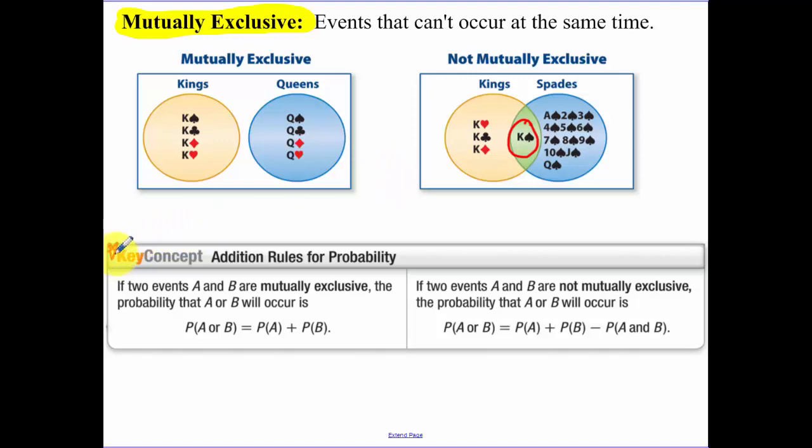This is important. Please make sure you write this down. Two events are mutually exclusive. If they're mutually exclusive, the probability that A or B occurs, you just add the probability of A and the probability of B.